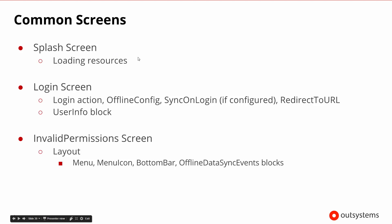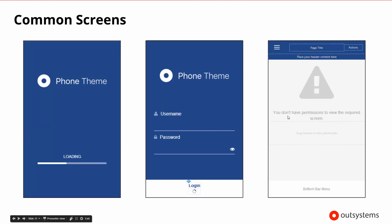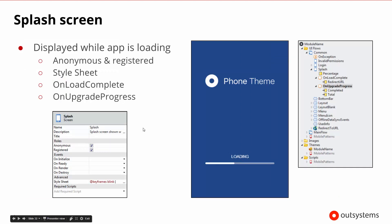For a mobile app you'd want a splash screen, you probably want people to log in so you need a login screen, and if a security issue occurs you want to be able to say the user doesn't have permissions to view the required screen. The splash screen will go ahead and track loading all of the resources it needs, and it will also show the progress on updates — when we upgrade an application and make changes, it will automatically upgrade the app and show the upgrading status.